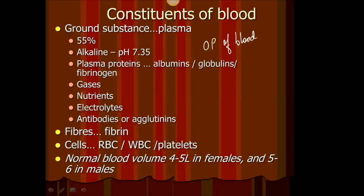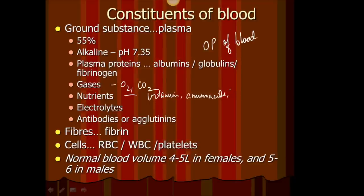Gases are also carried in the plasma — oxygen and carbon dioxide, the two main gases which are transported in plasma. Nutrients are also present: vitamins, amino acids which make up proteins, glucose which is the simplest form of sugar, and fatty acids and glycerol which form fats. They are all suspended in the plasma — that's how they go from one place to the other, because blood is a transport system.